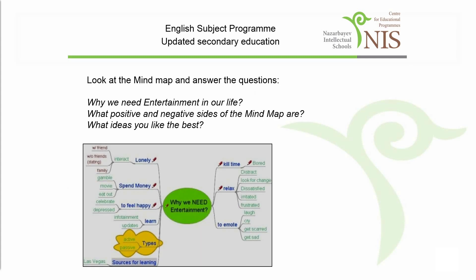First, put your learners into pairs or small groups to brainstorm and discuss ideas presented on the mind map: why do we need entertainment? They then answer the given questions while discussing the ideas.